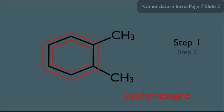Now we're ready for step two: number the carbons correctly. We want low branching numbers. To make the numbers low, we start carbon one on one of the branches. We could number counterclockwise or clockwise, but we want low substituent numbers, so we number clockwise so the next branch will be on carbon two. The rest of the carbon numbers would be three, four, five, and six.